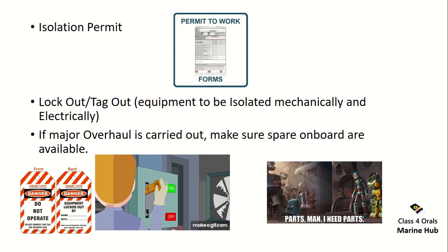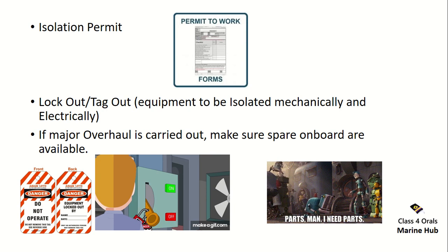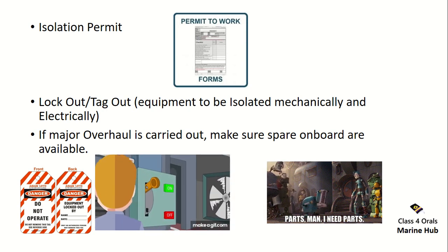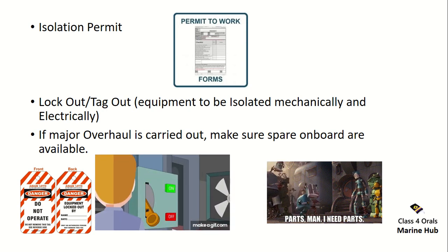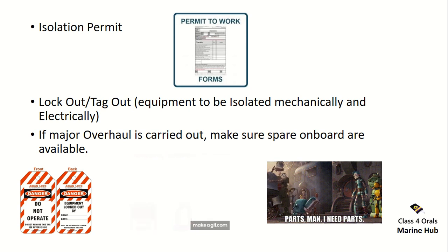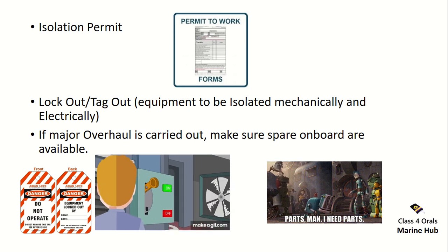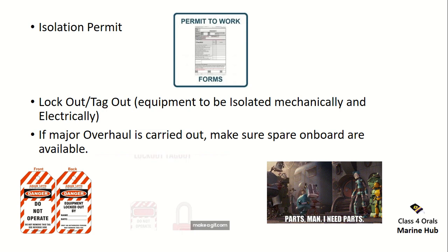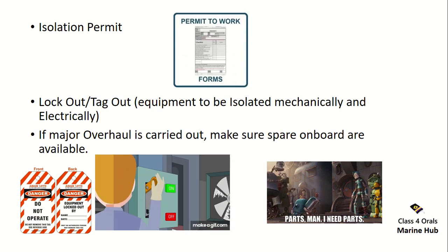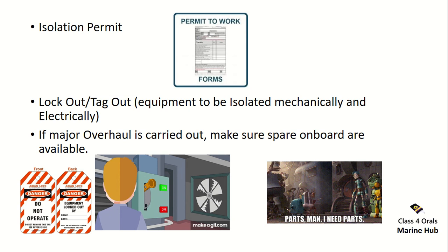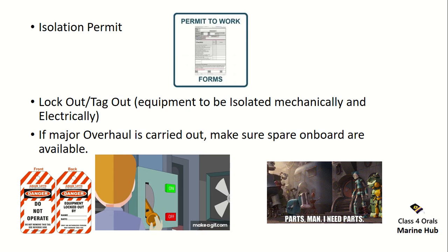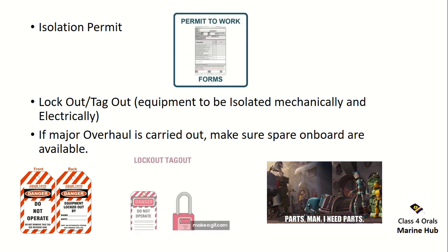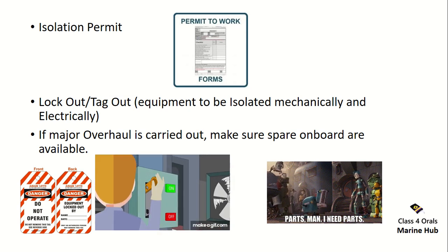Next, the electrical isolation permit — this includes the lockout and tagout procedures. We have to isolate the equipment both mechanically and electrically. We should also have spare parts on board in sufficient quantity if a major overhaul is to be carried out on the alternator.